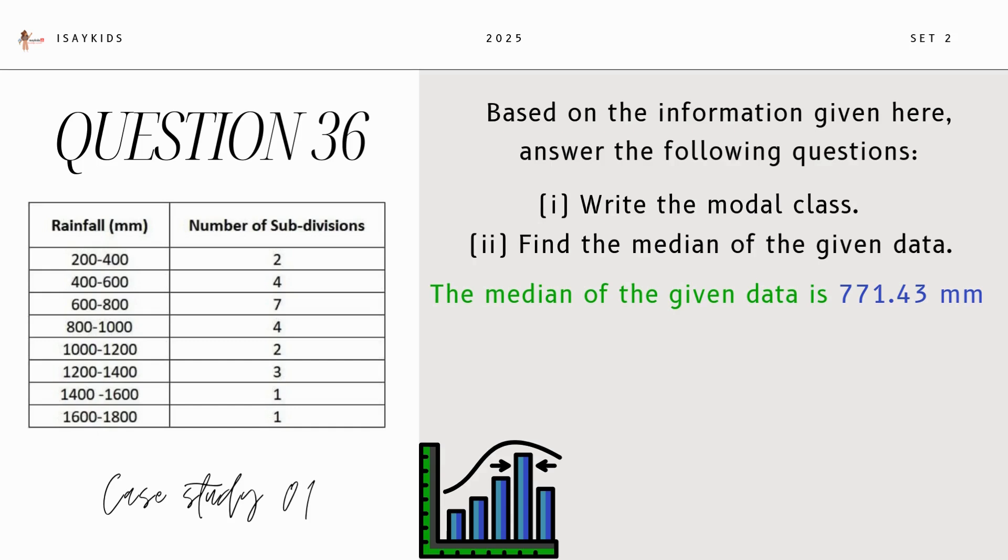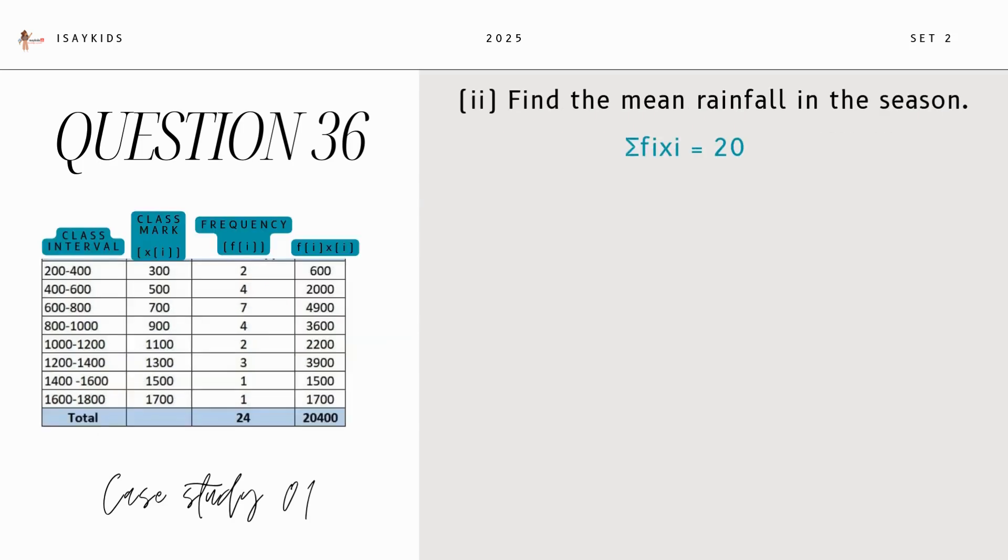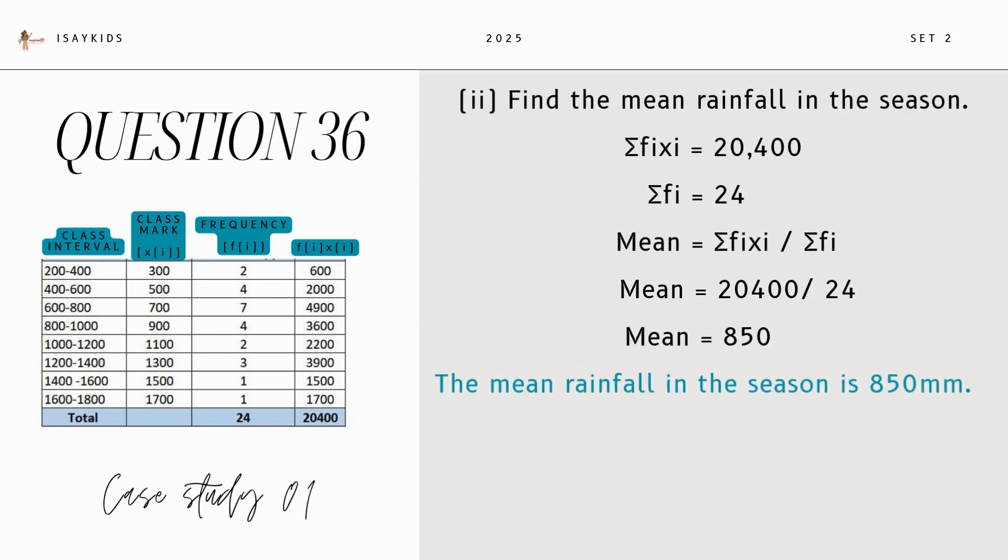The OR part of the same question is find the mean rainfall in the season. The table here shows that sigma FI Xi is 20,400. Sigma FI is 24. Mean is given by sigma FI Xi upon sigma FI. So, mean is 850. Hence, the mean rainfall is 850 mm.